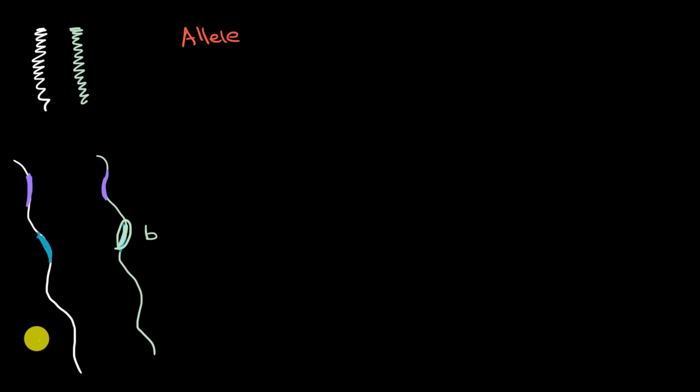I'll denote that with lowercase b. While from this parent, you might have gotten the allele that's associated with, say, brown hair. So they're both associated, or they're both coding for the same type of protein that might play a role in hair color, but they're different versions of it.